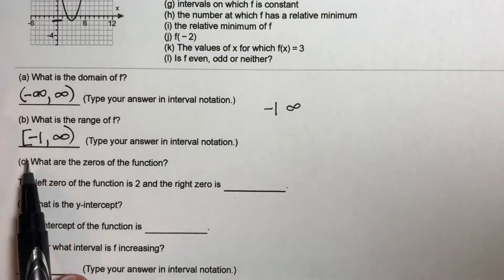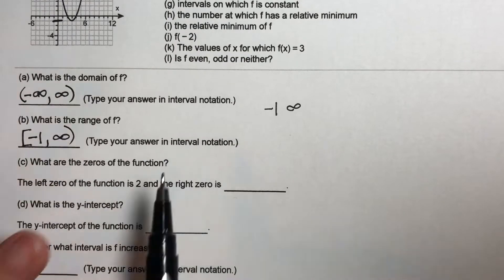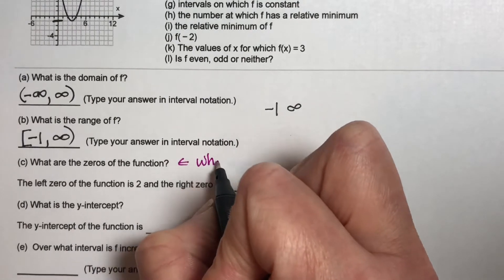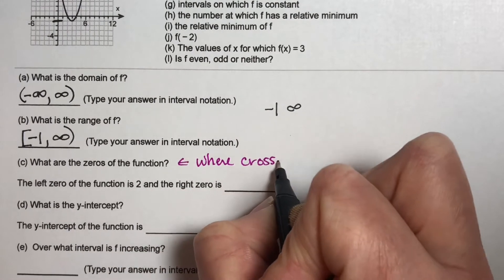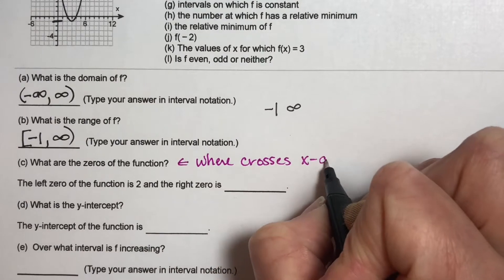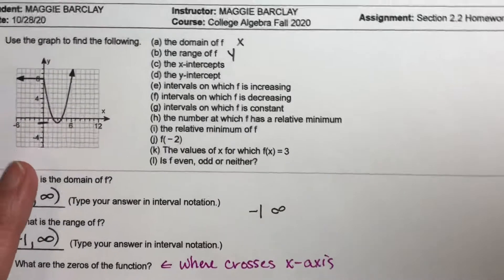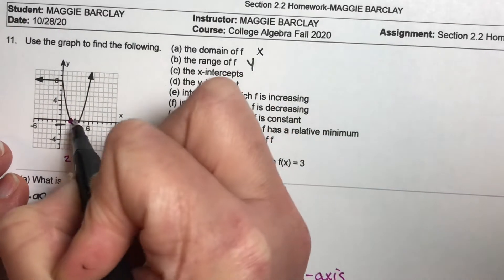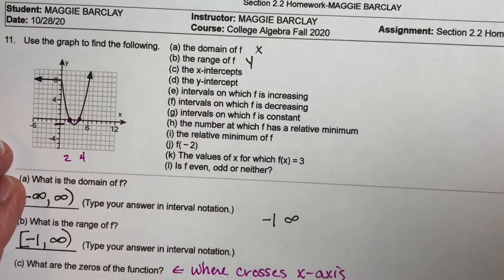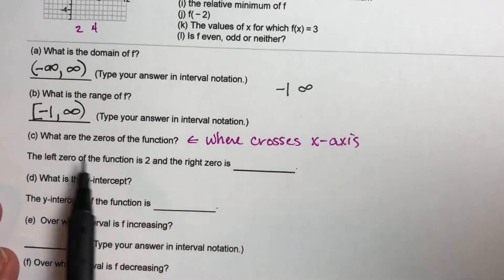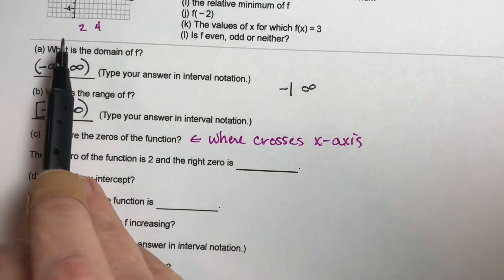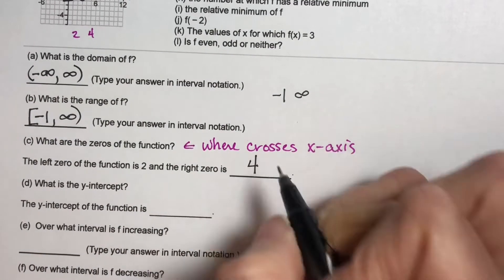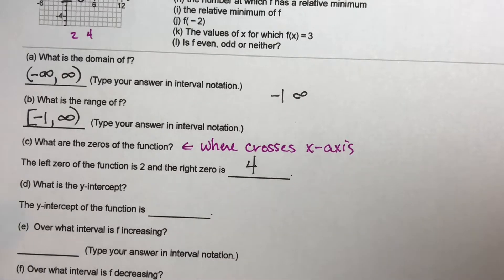Part C. What are the zeros of the function? The zeros are going to be where it crosses the x-axis. Now if we look at our graph, we cross the x-axis there, and that's at 2. Now we cross it here, which is at 4. We are asked, it says the left 0 is 2, which we found right here, and the right 0 is 4.